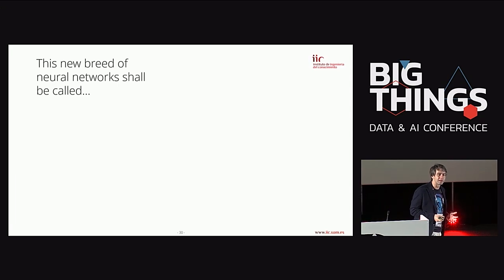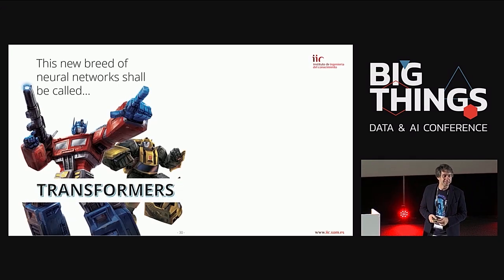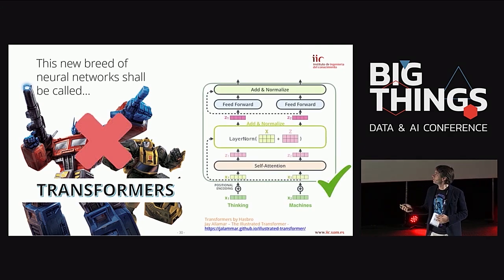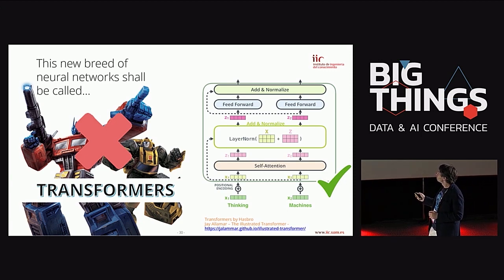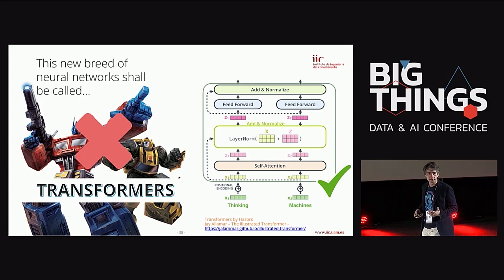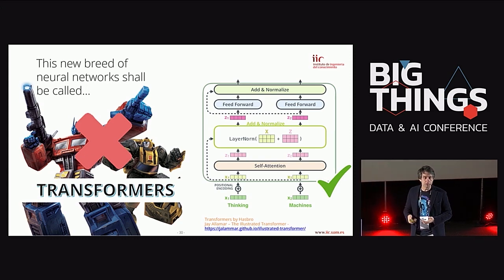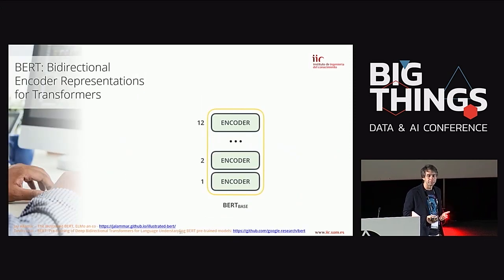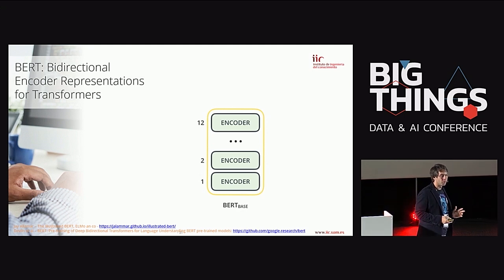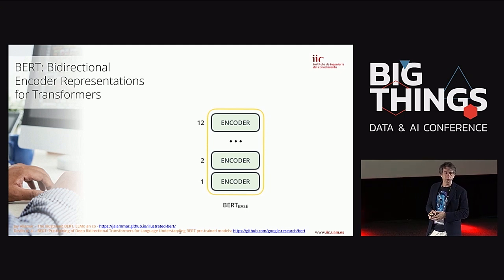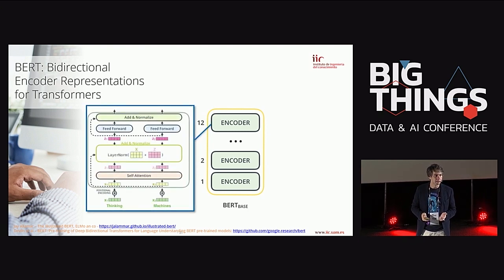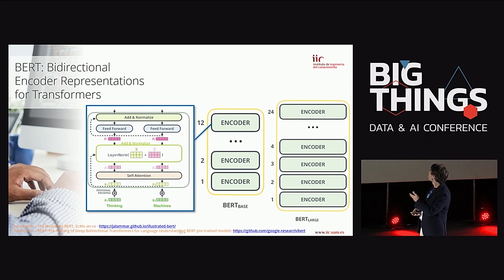Using these self-attention layers, we can build what are called transformers — not the movie robots, but a neural network block where self-attention layers receive one embedding per word, mix them, and output the same number of contextualized embeddings. Stacking many such blocks gives us BERT: Bidirectional Encoder Representations from Transformers. The base version has 12 transformer layers; a larger version has 24. The key idea is this stacking of transformer blocks.